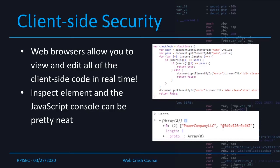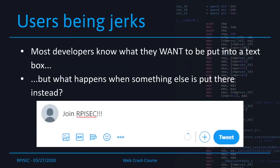In terms of client-side security, what a lot of people don't realize is that web browsers allow you to view and edit all of the client-side code in real time — things like inspect element and the JavaScript console. Here's an example of client-side security where in my web browser I can look and see what's happening, and in this case I can access a list of everyone's username and password. However, the more common vulnerability in the real world is that developers know what they want put into a text box, but sometimes people put other things there. While Twitter is meant for nice messages, sometimes people decide to put something more like this.